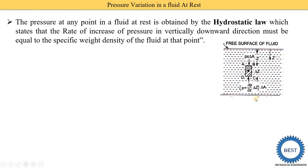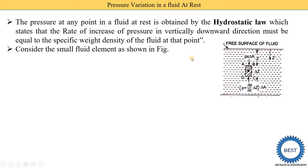Consider this liquid at rest. This is the free surface of the liquid. From the free surface, we consider a fluid element with dimensions A, B, C, D. This fluid element is present at a certain height Z from the free surface of the liquid. Let δA be the cross-sectional area of the element — the area seen from the top view is called δA.